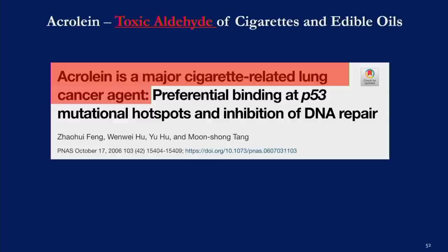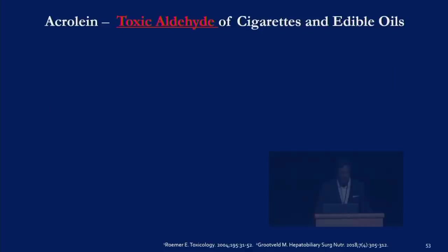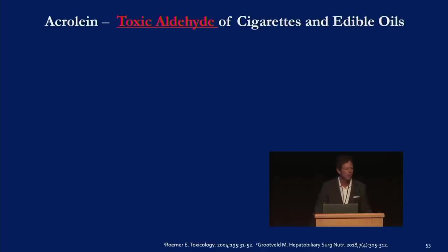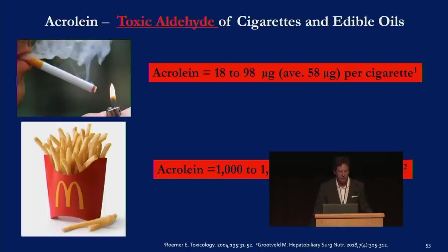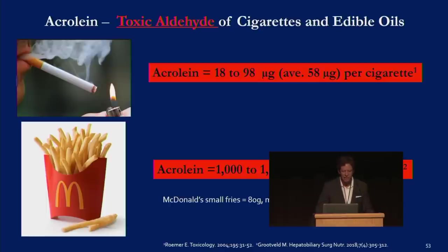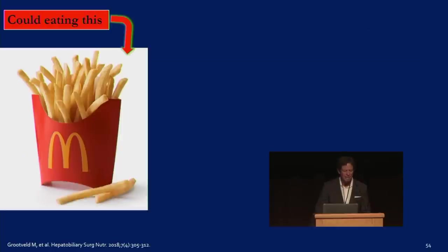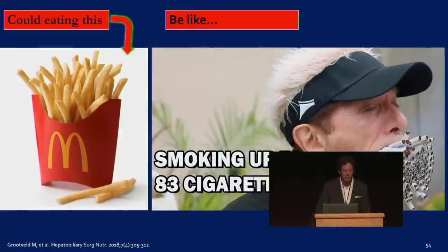Acrolein is a major cigarette-related lung cancer agent, and it's also present in edible oils — both share many toxic aldehydes. Acrolein content is 18 to 98 micrograms per cigarette. But the acrolein in 154 grams of french fries — comparable to a large McDonald's french fries at 150 grams — is 1,000 to 1,500 micrograms according to Grootveld's research.